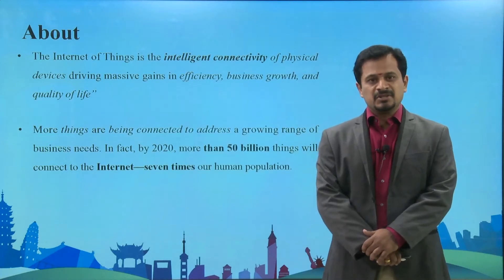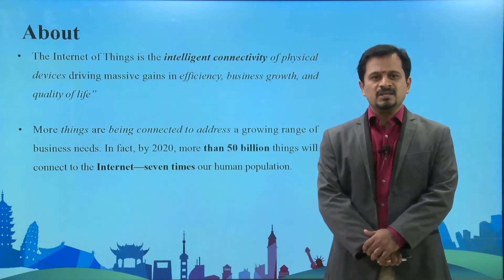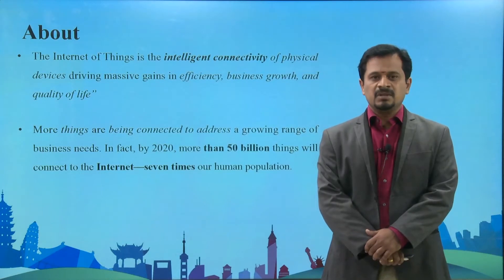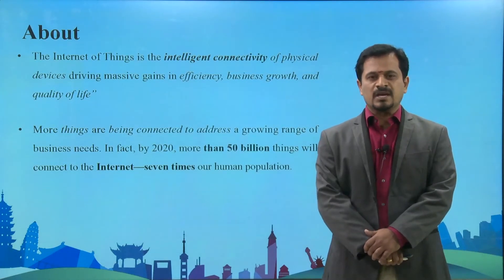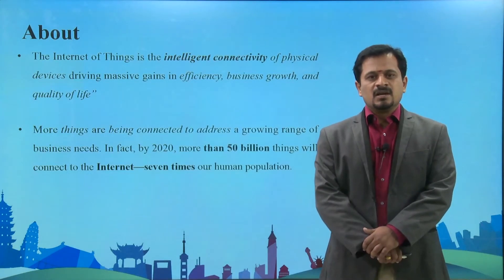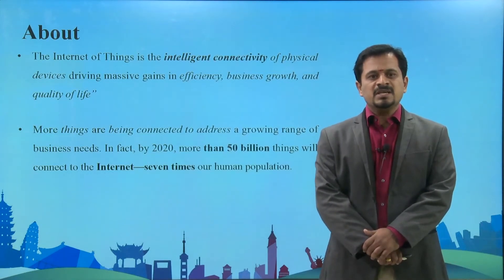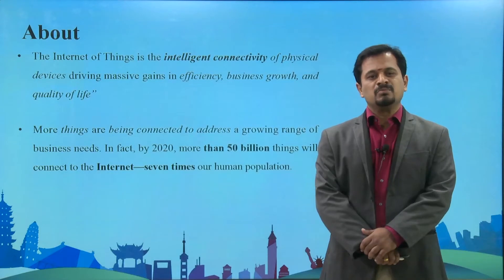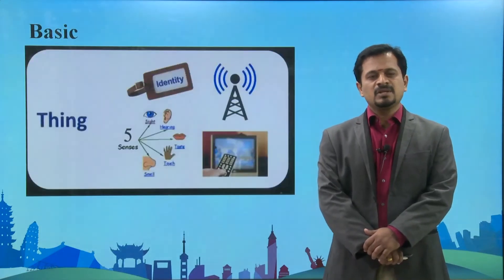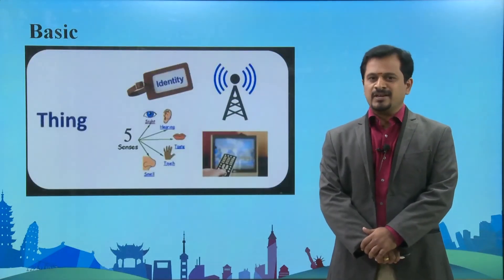In fact, in the year 2020 there are 50 billion devices — 50 billion things — going to be connected to the internet, and this number is going to be seven times the human population. Now let's see what the basics of Internet of Things are.